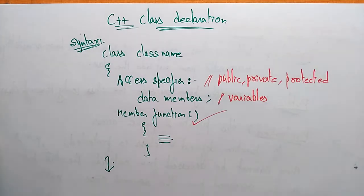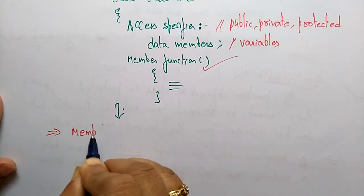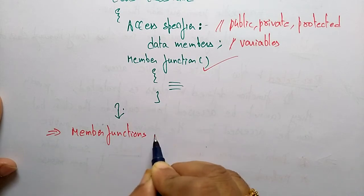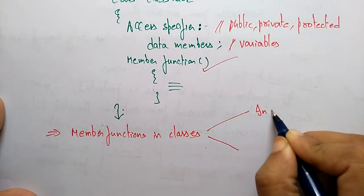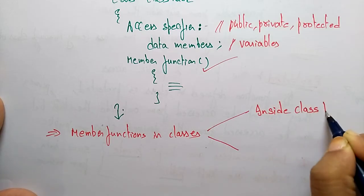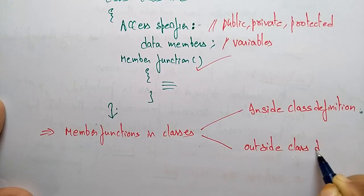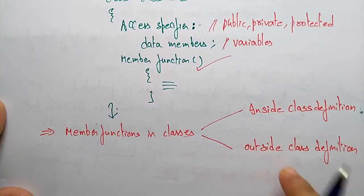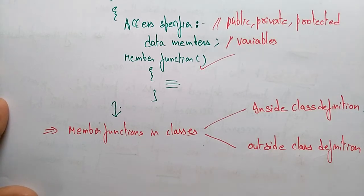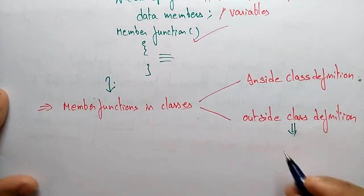Now coming to the member functions — what are the member functions in the class? The member functions in classes can be defined in two ways: inside the class definition or outside the class definition. If you want to define a member function outside a class definition, you have to follow one rule.